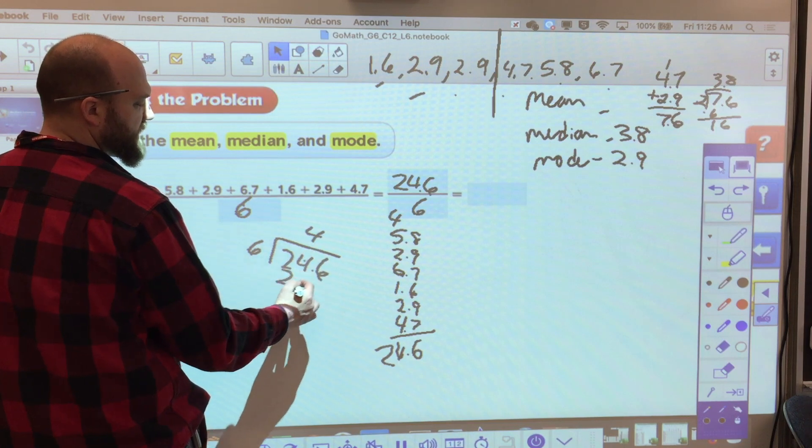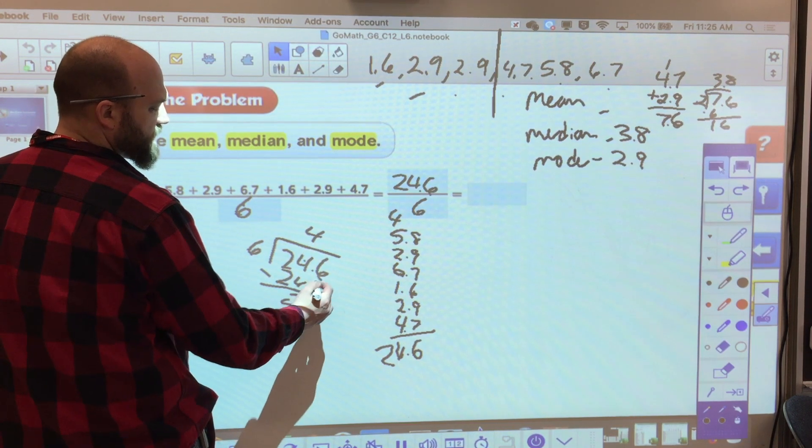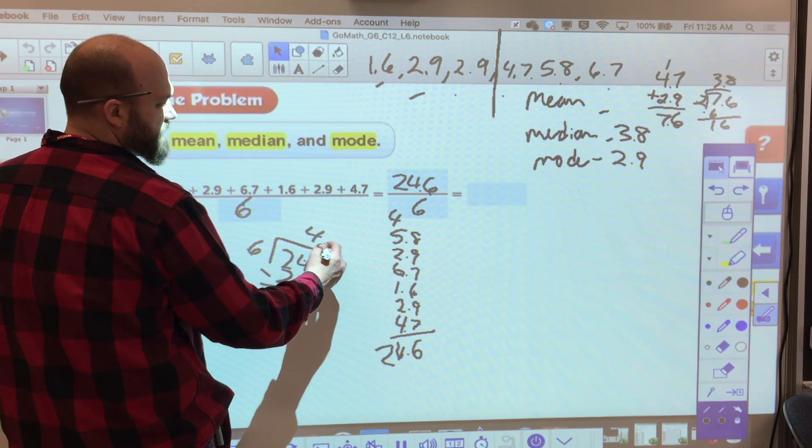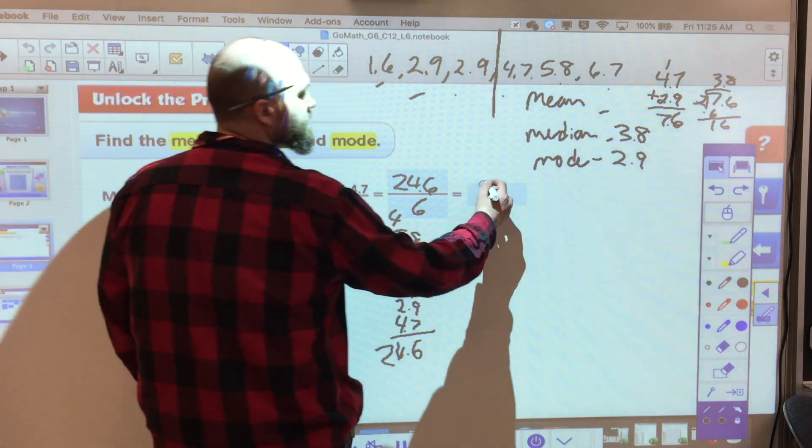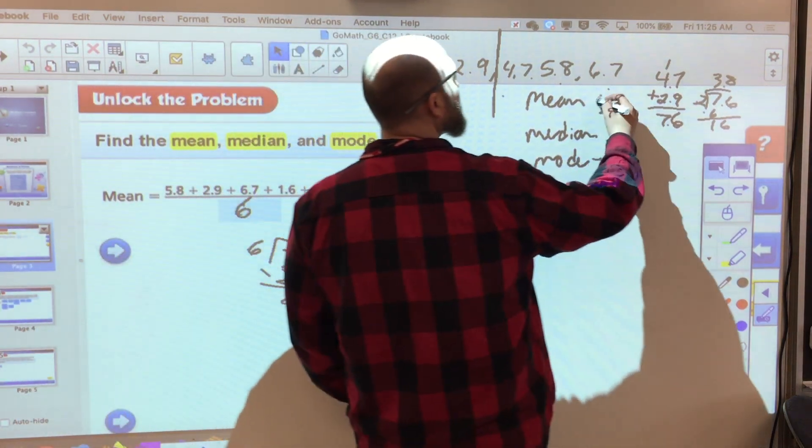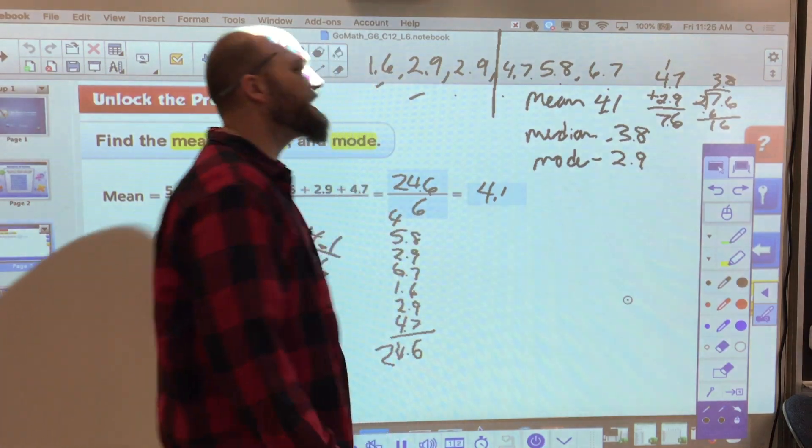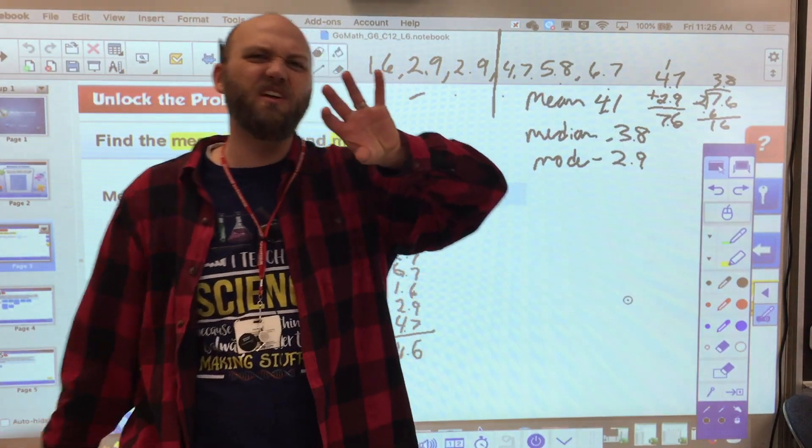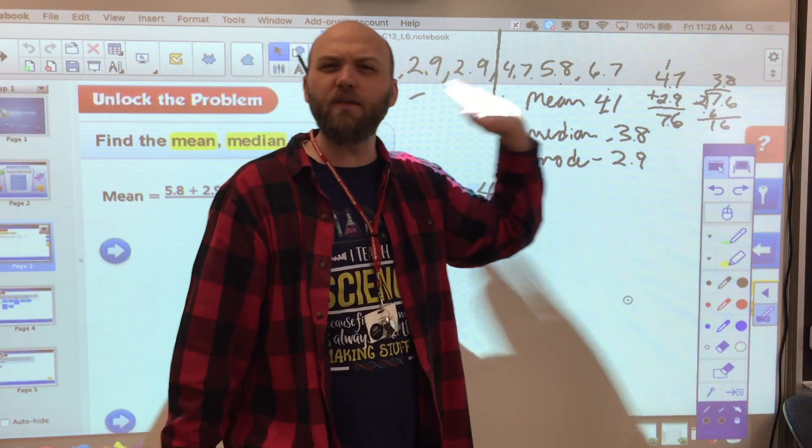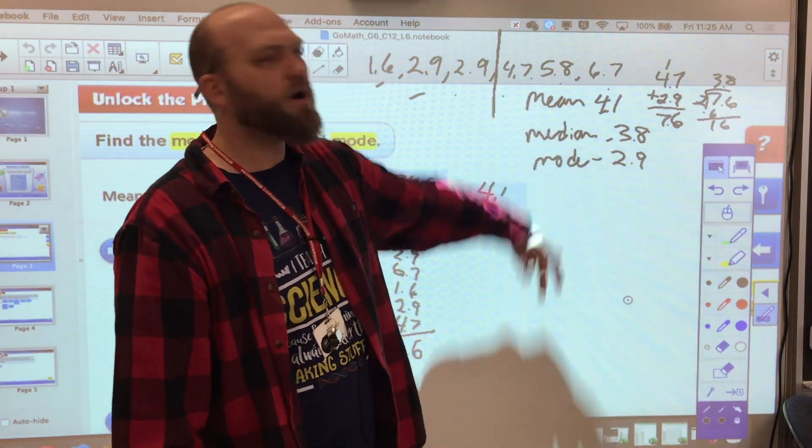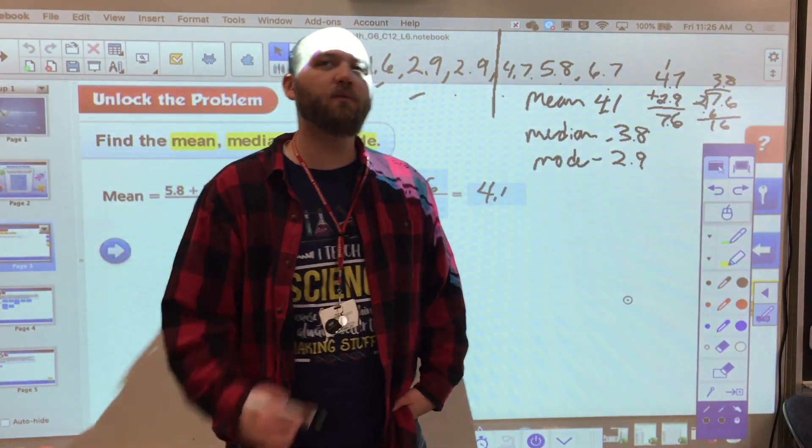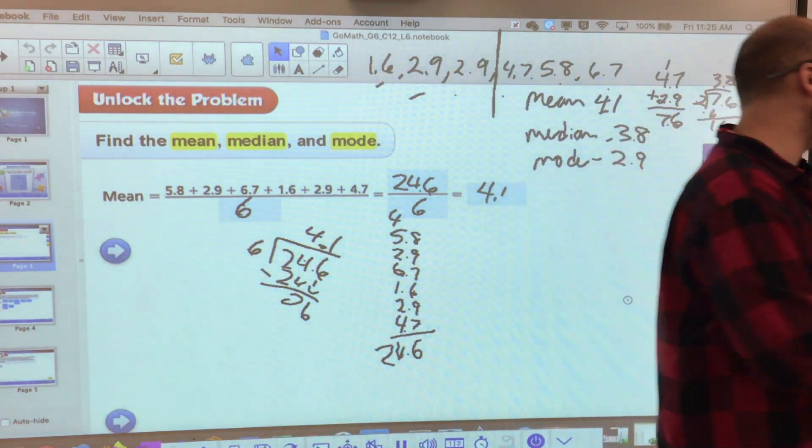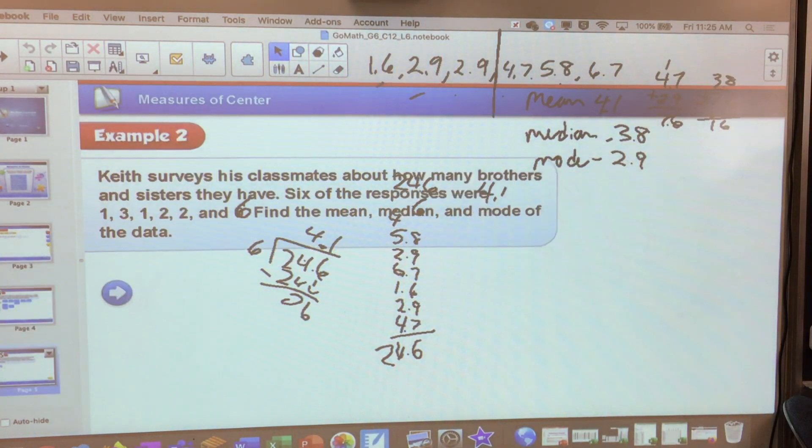6 goes into 24 four times. And that gives me 24. And I bring down the 6. 4.1. So my mean is 4.1. So the average then is 4.1. You can see my mean, my median, and my mode are all pretty well together. I don't have anything too far out of the ordinary here. So they're all a good measure of center.